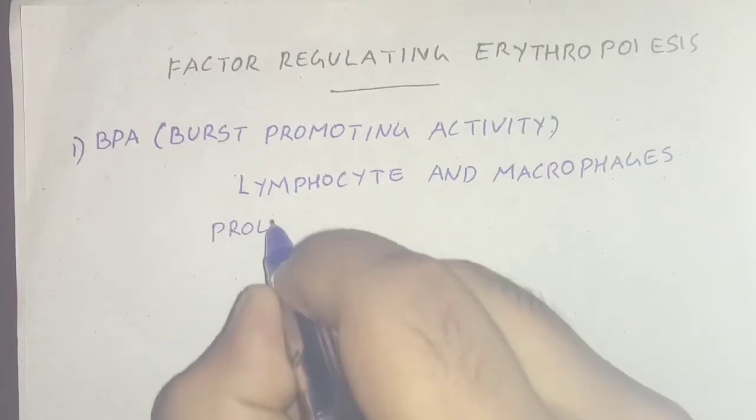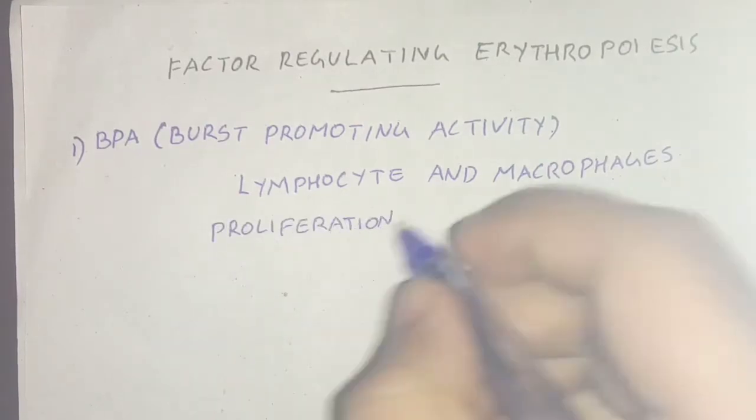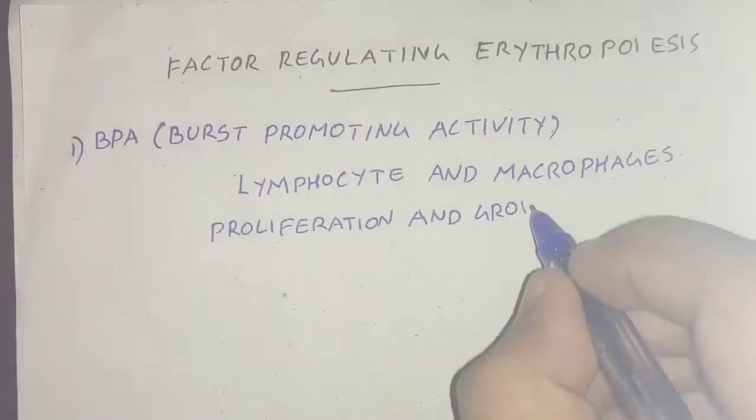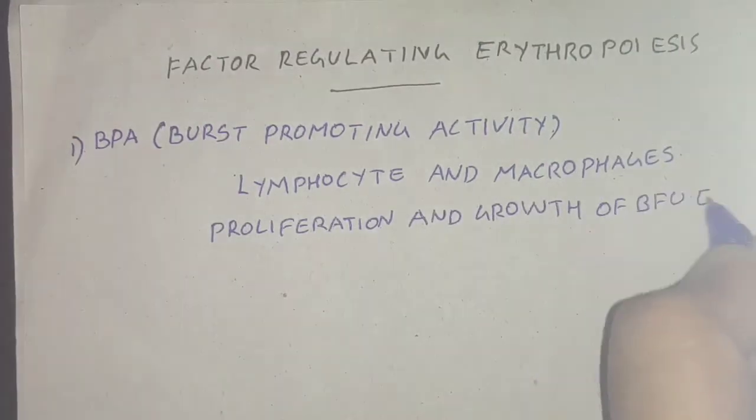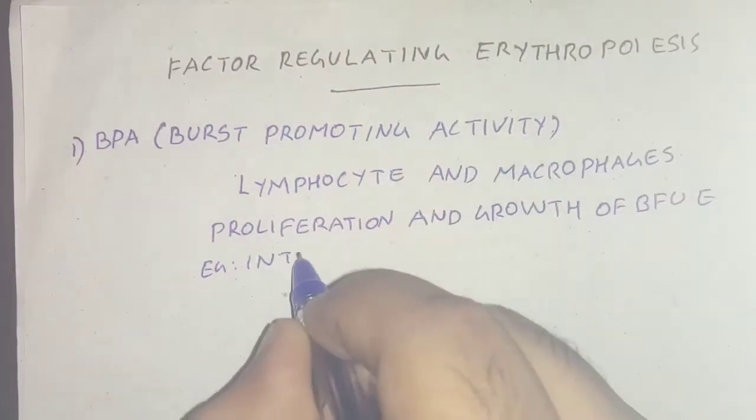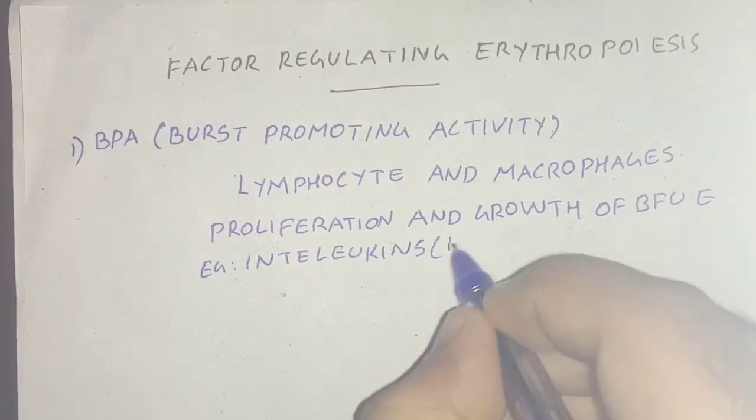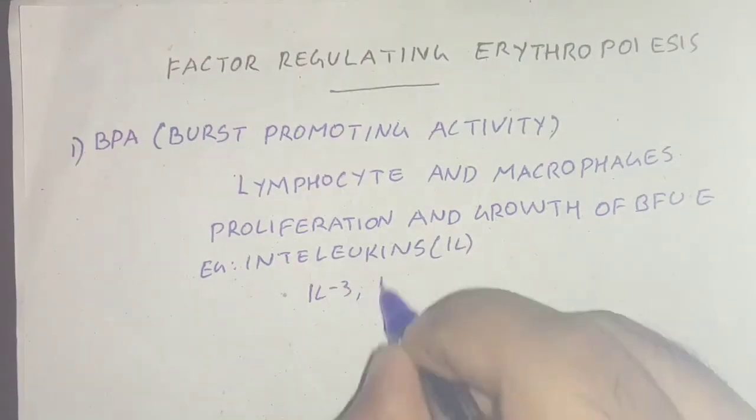BPA is a substance produced by lymphocytes and macrophages, which is necessary for the proliferation and growth of BFU-E. For example, interleukin 3 and interleukin 11 are examples of BPA.